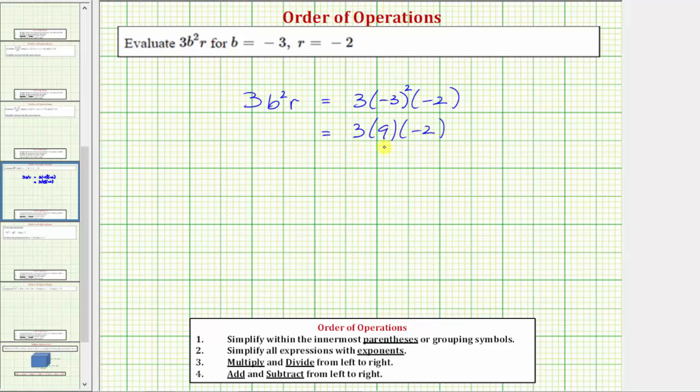From here, we multiply from left to right. Well, three times nine is equal to 27, so we have 27 times negative two, and 27 times negative two is equal to negative 54.